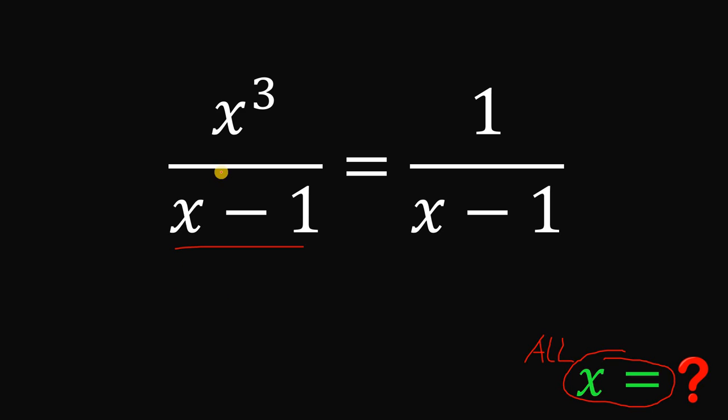Alright, so first inspection. We have here x minus 1 on the denominator. So it tells us that x must be not equal to 1. Because when this x equals 1, 1 minus 1 will give us 0, and 1 over 0 is definitely undefined. So we cannot have x equals positive 1.